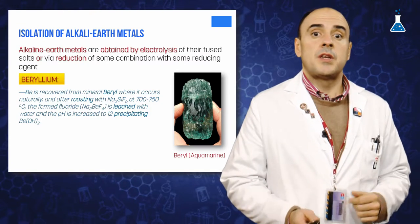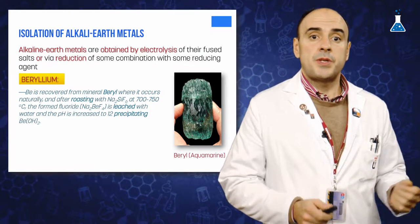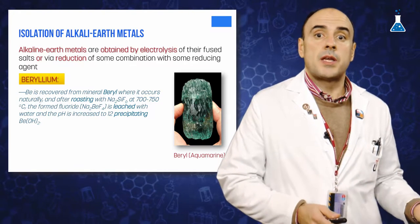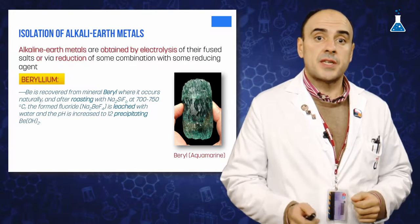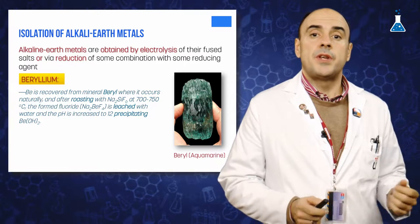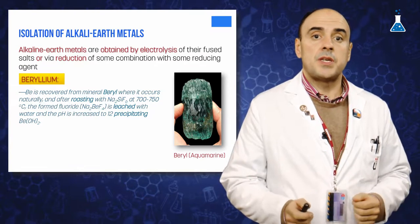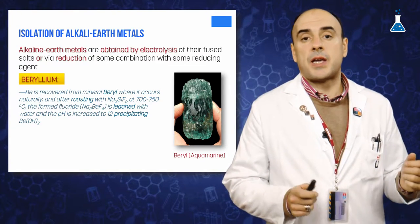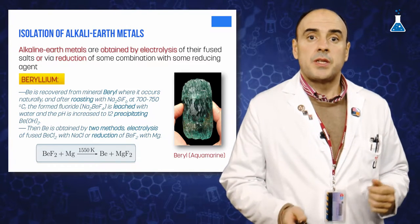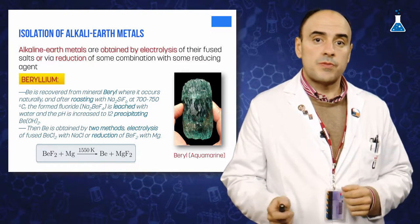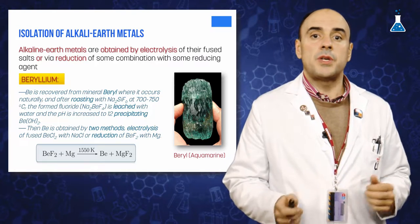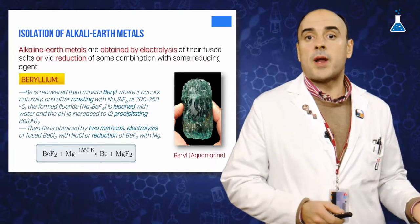Beryllium is extracted from the semi-precious mineral beryl, where it occurs naturally, and after some phases of roasting and leaching with water, beryllium is precipitated as beryllium dihydroxide. Consequently, the two commercial methods for producing beryllium consist of converting this compound into a chloride or a fluoride.